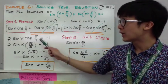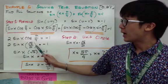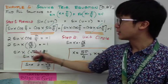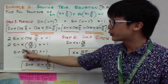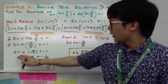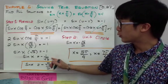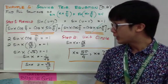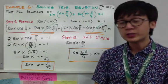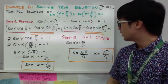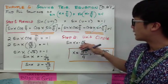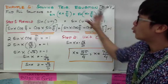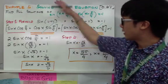Simplifying, the 2 cancels, leaving sine x times square root of 2 equals negative 1. Solving for sine x gives sine x equals negative 1 over square root of 2. Rationalizing the denominator gives sine x equals negative square root of 2 over 2. Using the unit circle, the angles where sine equals negative square root of 2 over 2 are 5pi/4 and 7pi/4. That is how we use the sum and difference formula to solve a trig equation.